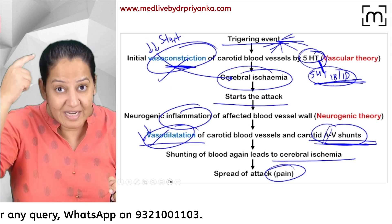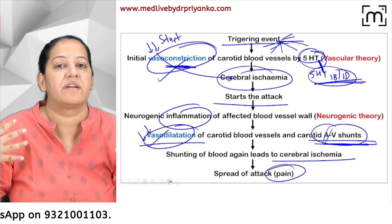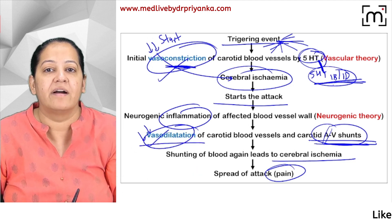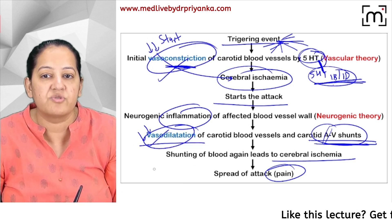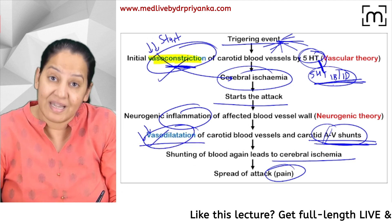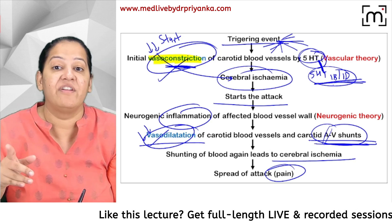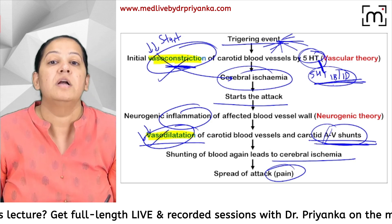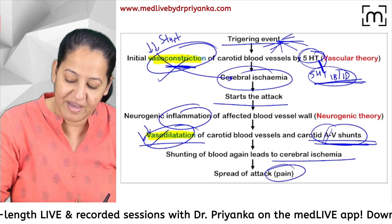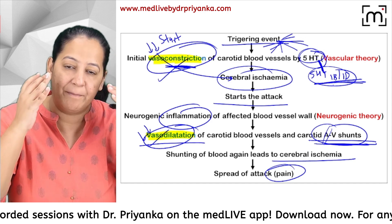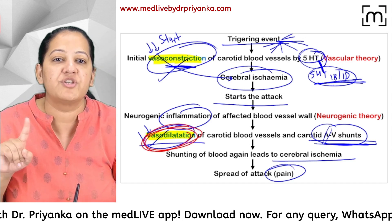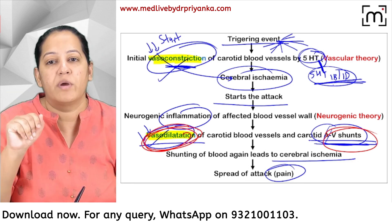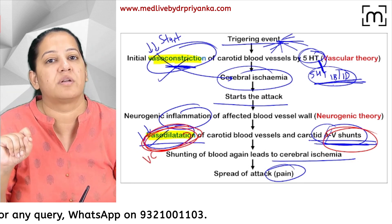The pain spreads everywhere — initially it was at one point and now it has spread everywhere. The start of the attack is due to vasoconstriction, but later the pain spreads because of vasodilation. If a patient is already in the clinic with pain, there is already vasodilation of the shunt, so you need to give a drug that causes vasoconstriction.